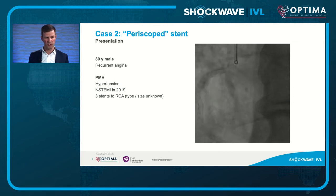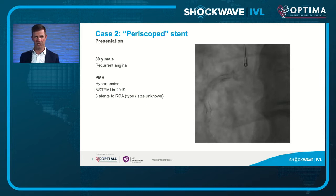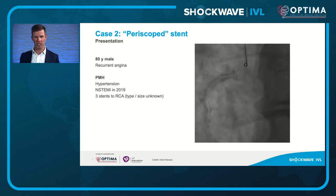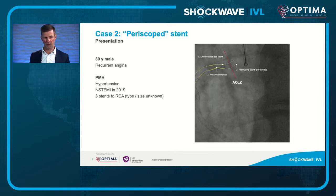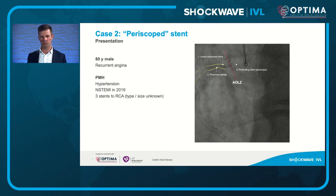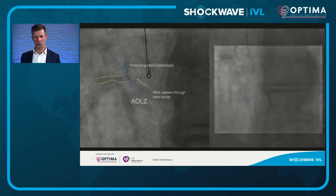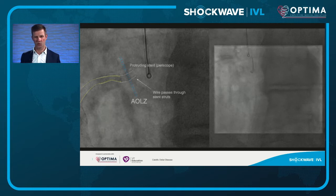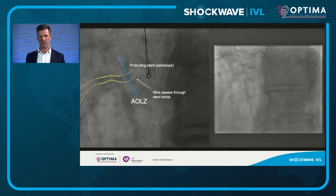Second case: a patient who has already been treated. This 80-year-old gentleman with hypertension had an NSTEMI about a year ago, receiving three stents at a referring hospital. These stents were not well deployed — they were under-expanded, with proximal overlap and protrusion into the aorto-ostium. All the drivers of early stent failure were present. I use a workhorse wire passed through the side struts to gain guide stability, then advance a secondary workhorse wire down the coronary.